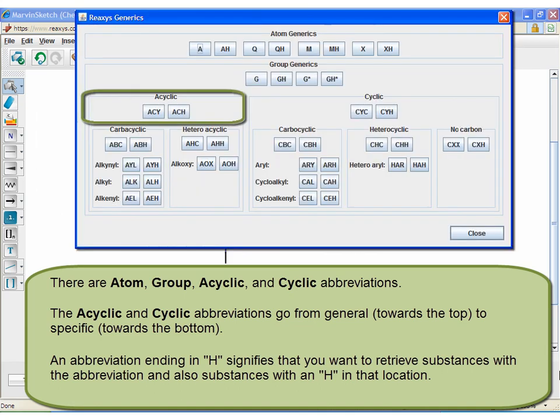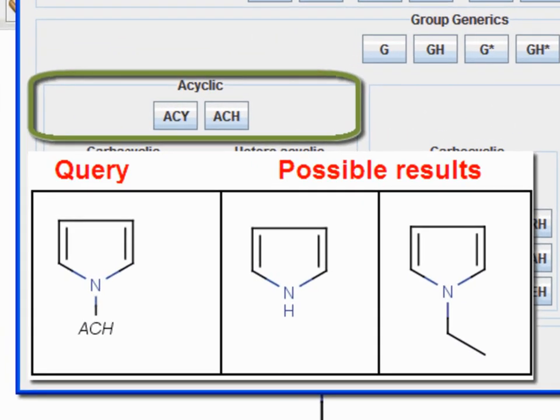An abbreviation ending in H signifies that you want to retrieve substances with the abbreviation, and also substances with hydrogen in that location, as shown here.